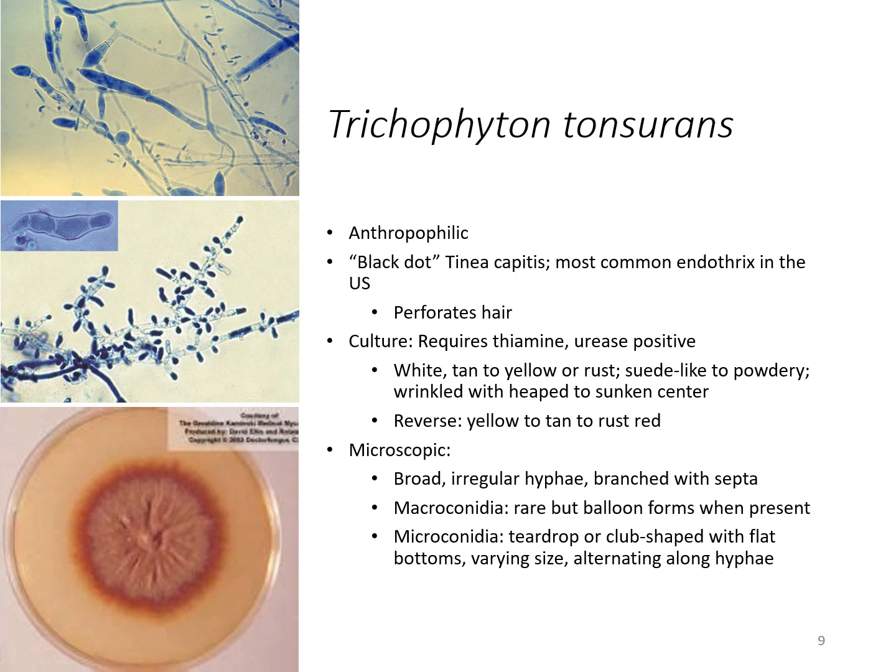Trichophyton tonsurans is transmitted man to man. It is the cause of Tinea capitis, sometimes referred to as black dot. It invades the hair shaft itself — if you were to look at it under a microscope, you would see the organism growing inside of the hair shaft. Culture requires thiamine to grow and it is urease positive. It can be white to tan, yellow, or rust colored, suede to powdery, and can be wrinkled with a heaped-up center or sunken in. The picture at the bottom shows that rust color with those little wrinkles.